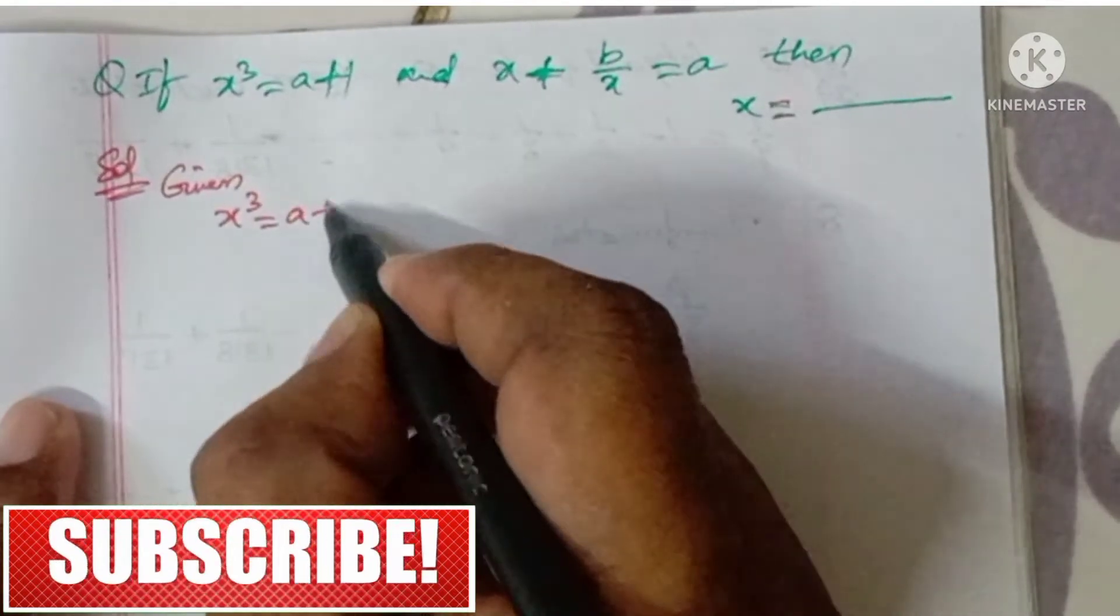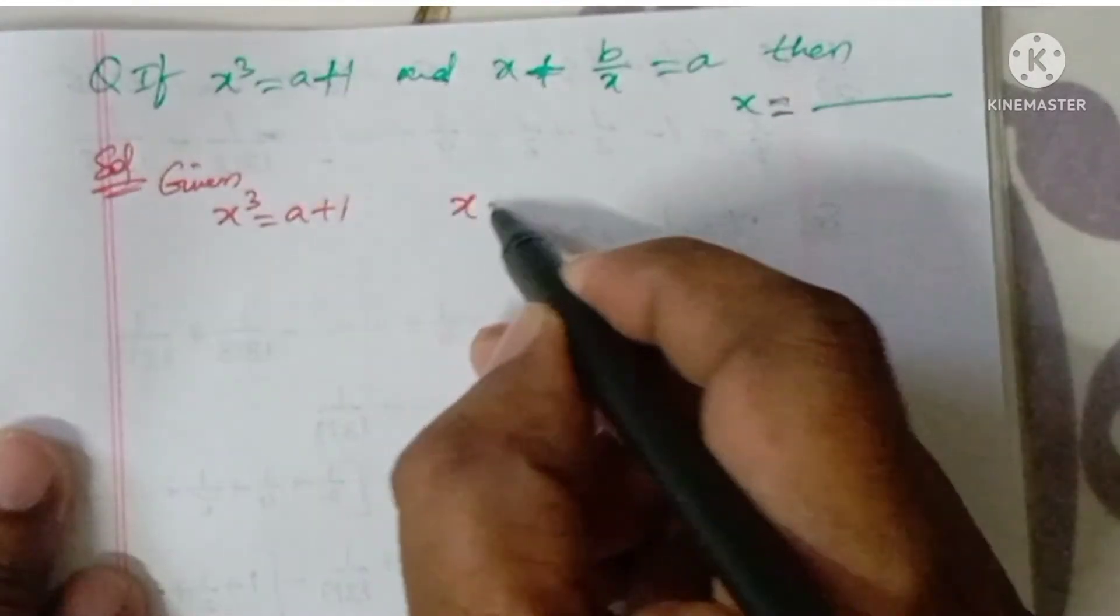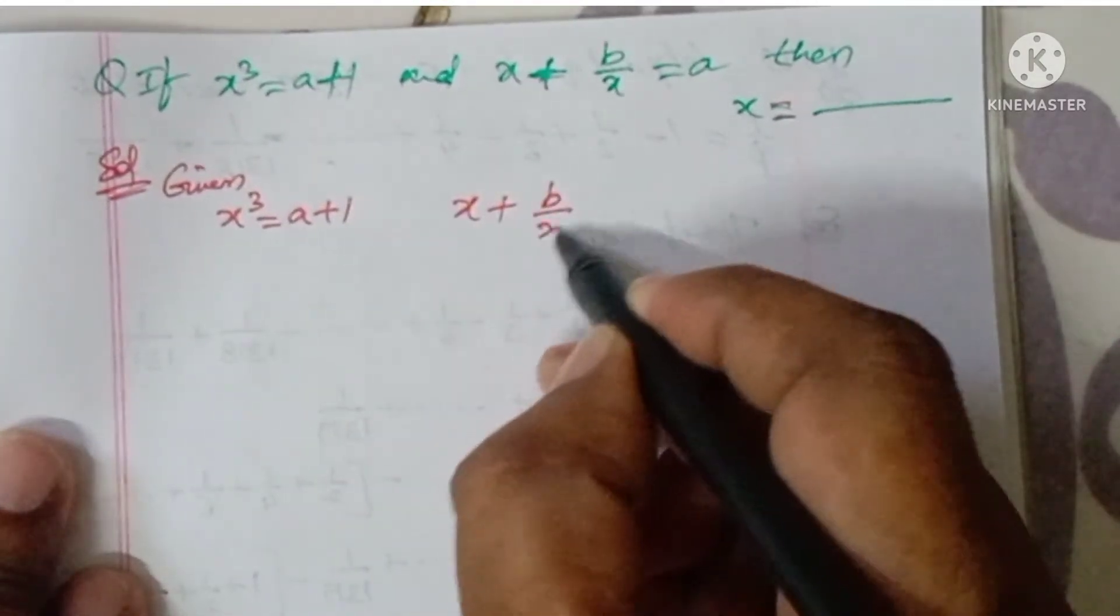So given x³ is equal to a+1, and x + b/x is equal to a.